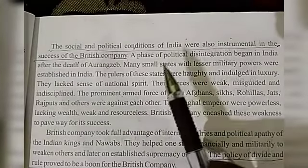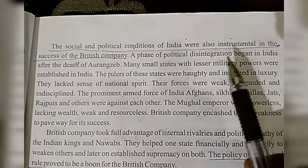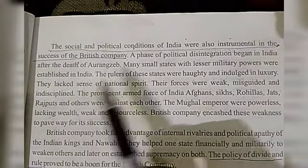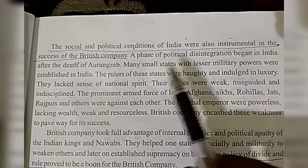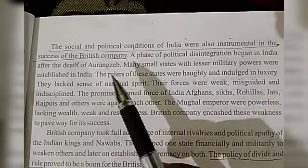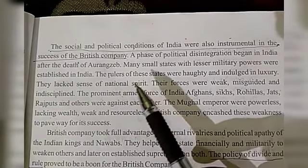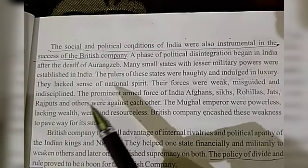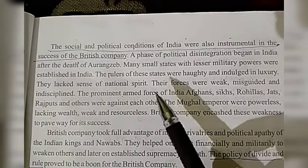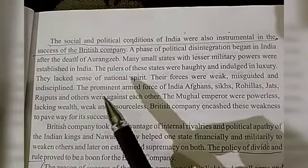The social and political conditions of India were also instrumental in the success of the British company. A phase of political disintegration began in India after the death of Aurangzeb. Many small states with lesser military powers were established in India. The rulers of these states were haughty and indulged in luxury. They lacked a sense of national spirit, and their forces were weak, misguided and undisciplined.